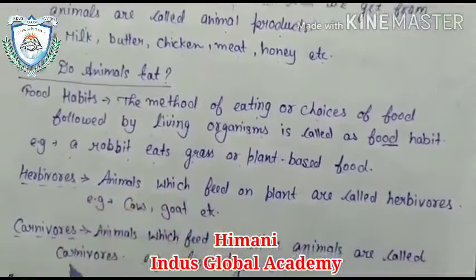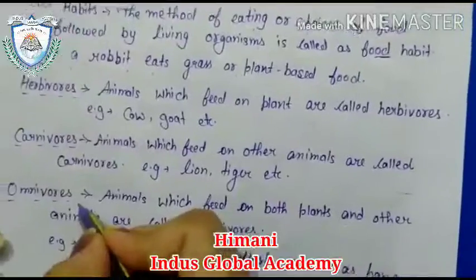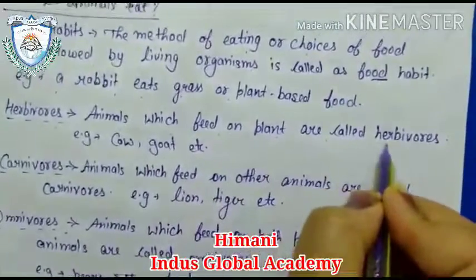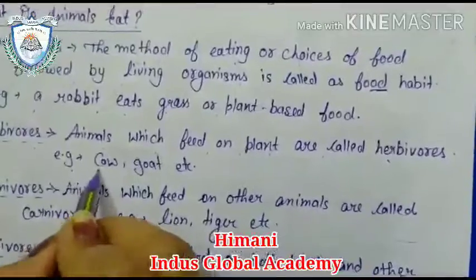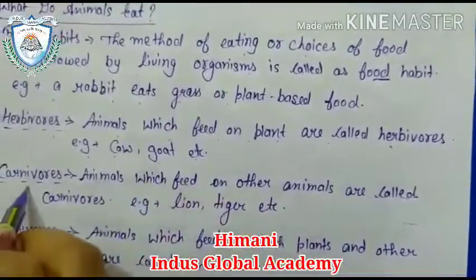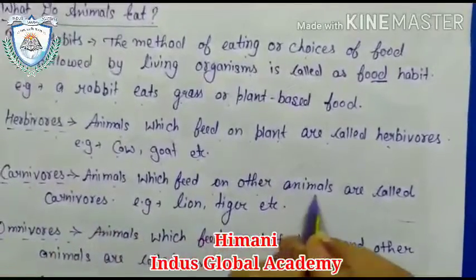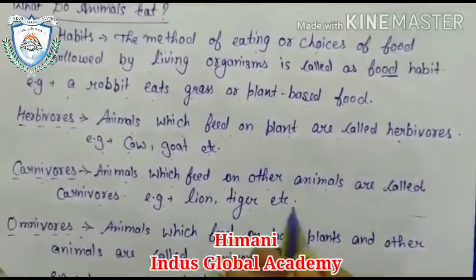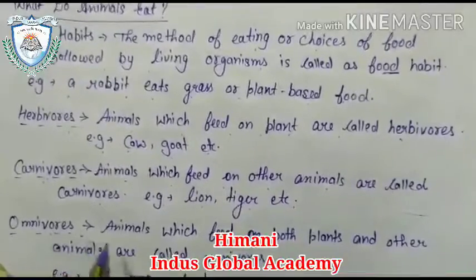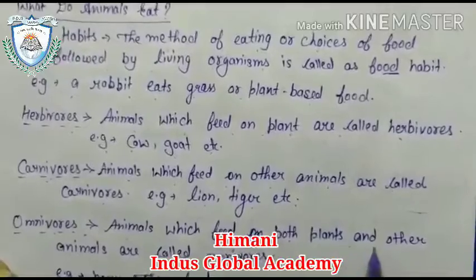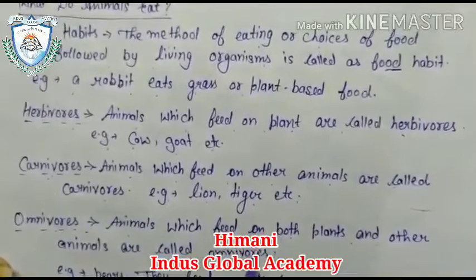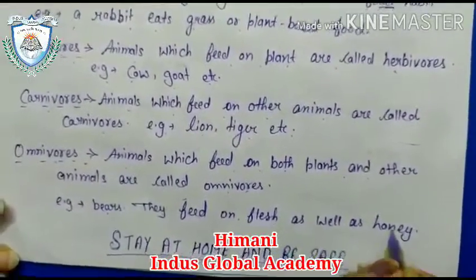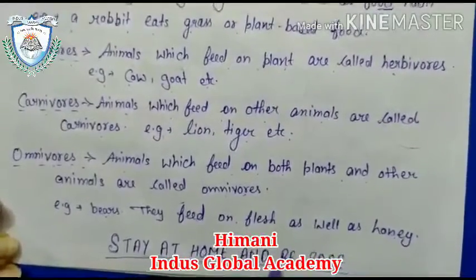There are three categories. First is herbivores — animals which feed on plants are called herbivores, for example cow and goat. Second is carnivores — animals which feed on other animals are called carnivores, for example lion and tiger. Third is omnivores — animals which feed on both plants and other animals are called omnivores, for example bear, which feeds on flesh as well as honey.